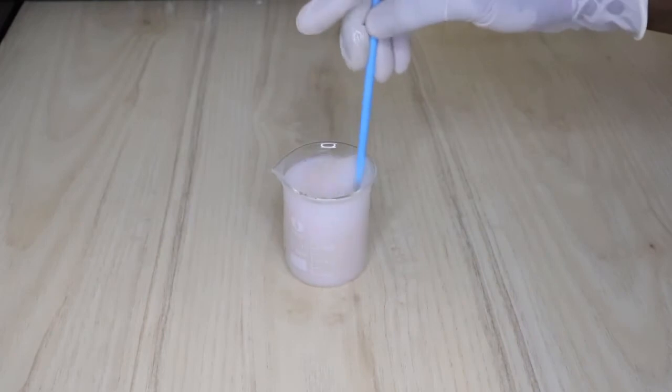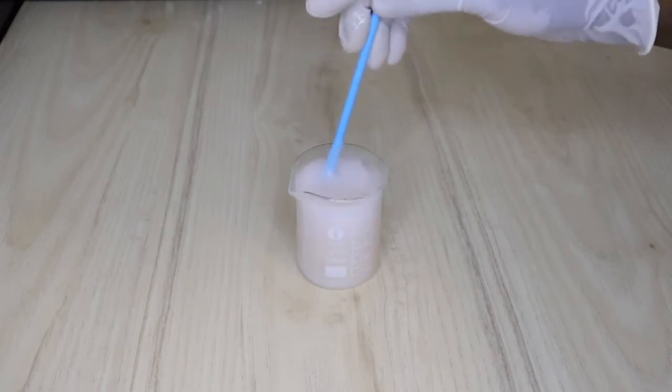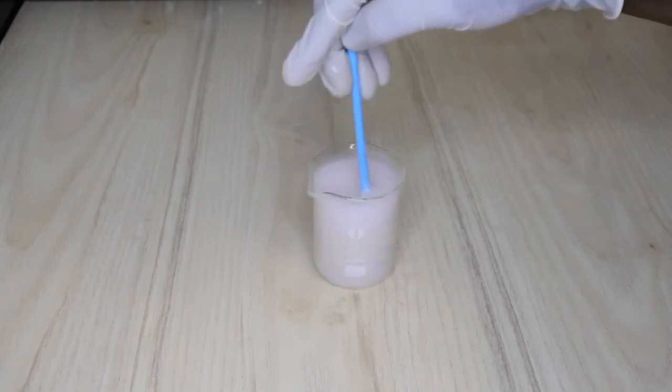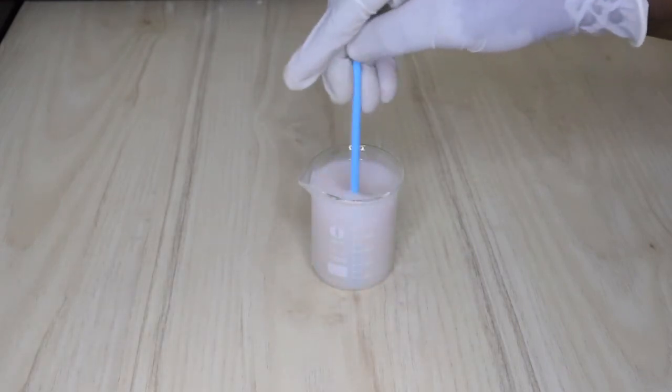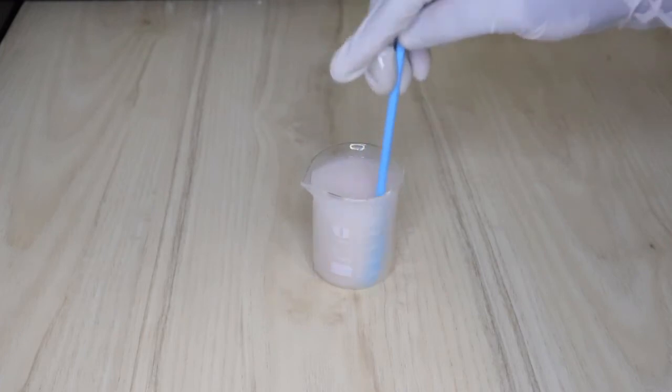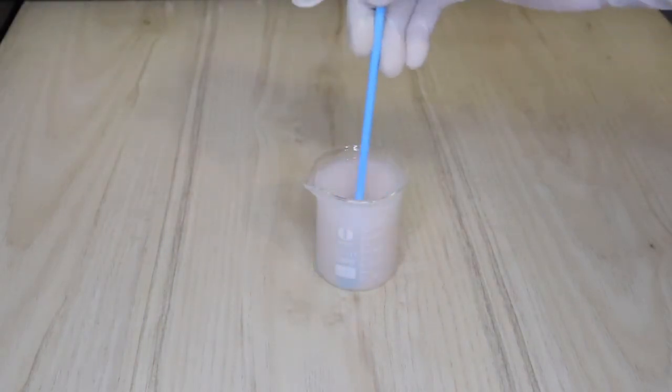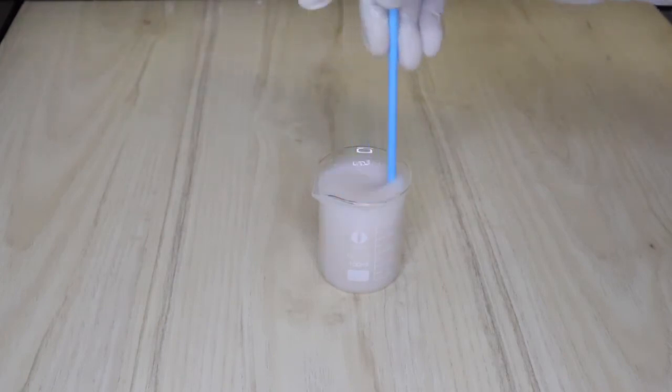Mix it very well. Make sure you mix it to the extent that there is no trace of anything, because I mixed it halfway last month. By the time I wanted to shampoo my hair, I discovered that the residue was at the bottom. I had to shake it. Not that it's a big deal, but if you mix it very well before you pour it in your bottle, you are going to find that there will be no separation.